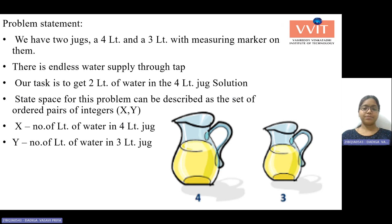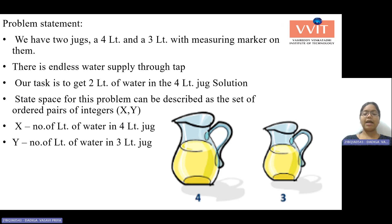Let us consider a state space for this problem, which can be described as a set of ordered pairs of integers x, y. That means all the states are represented in the form of ordered pairs x, y. In the figure below, we have a 4-liter water jug and a 3-liter water jug. Our goal is to get 2 liters in the 4-liter water jug.